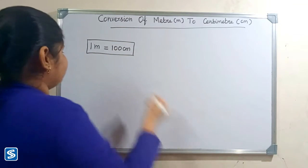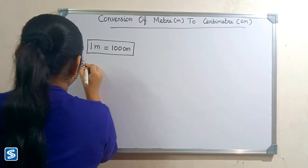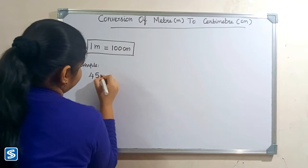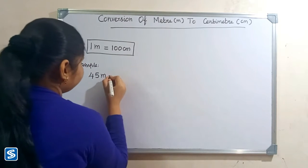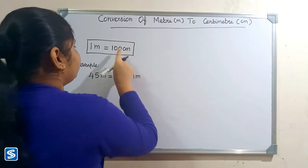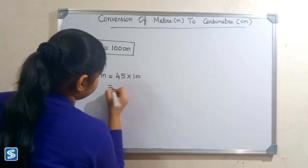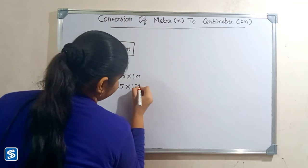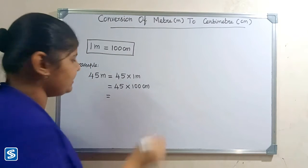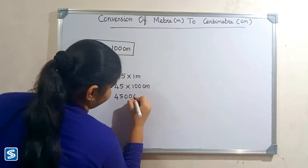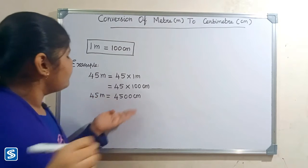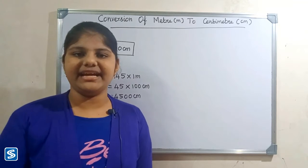Now we will take some examples. For example, we can take 45 meters. 45 meters can be written as 45 multiply one meter. Now we have to substitute 100 centimeters in the place of one meter, so 45 multiply 100 centimeters will be 4500 centimeters. So 45 meters is equal to 4500 centimeters.